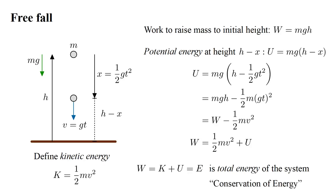Because w is just a number, not a function of time as k and u are, the total energy e is a constant. This expresses the so-called conservation of energy. As time goes on, the form of energy may change — say from potential energy to kinetic energy — but the total energy remains constant, and is equal to the work we did to set up the initial conditions of the system.